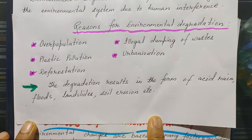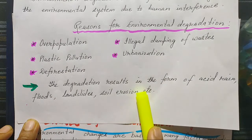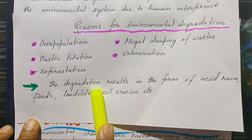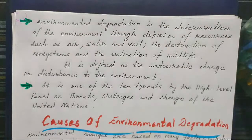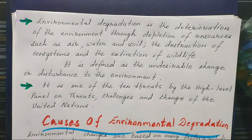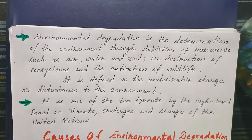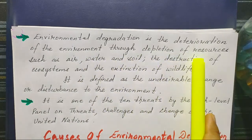Environmental degradation results in the form of acid rain, floods, landslides, and soil erosion. When we talk about environmental degradation, it is the deterioration of the environment through depletion of resources.